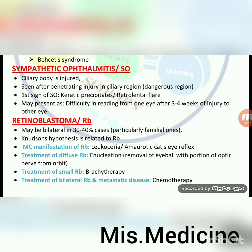Retinoblastoma: may be bilateral in 30–40% of cases, particularly familial ones. Knudson's hypothesis is related to retinoblastoma. Most common manifestation is leukocoria or amaurotic cat's eye reflex. Treatment of diffuse retinoblastoma: enucleation — removal of eyeball with portion of optic nerve from orbit. Treatment of small retinoblastoma: brachytherapy. Treatment of bilateral retinoblastoma and metastatic disease: chemotherapy.